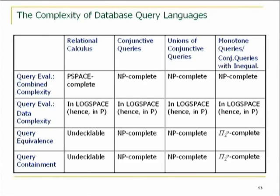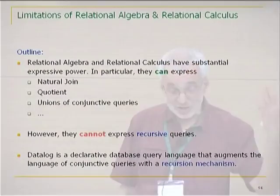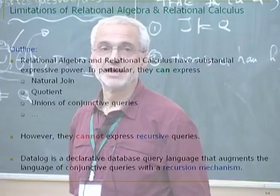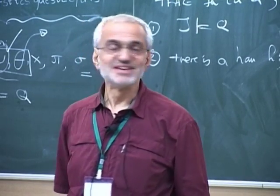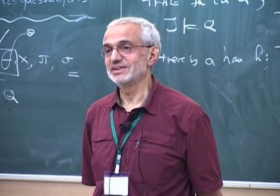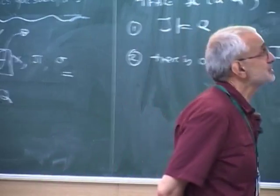Let me ask if there are any questions, because this is about to start the last part of this presentation. We have been talking about calculus and algebra. We saw that they can do all these nice things, but we also saw time and again in the last two days that there are some things they cannot do. The most striking thing we have seen now, with three different proofs, is that transitive closure is not first-order definable — so it's not expressible in algebra or calculus.